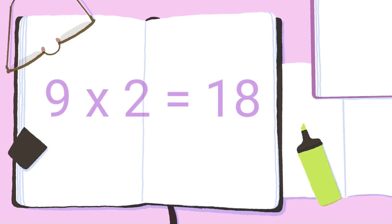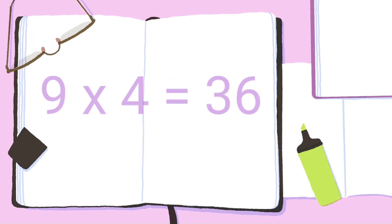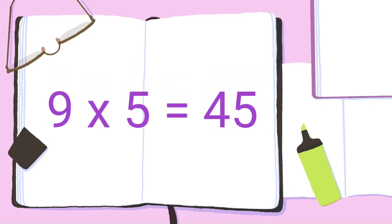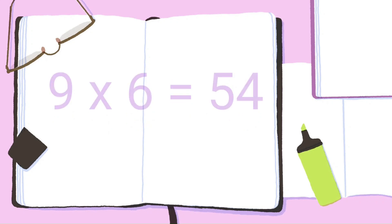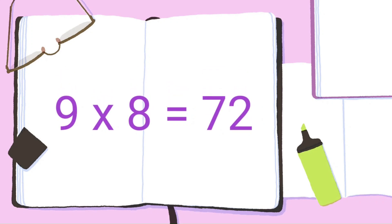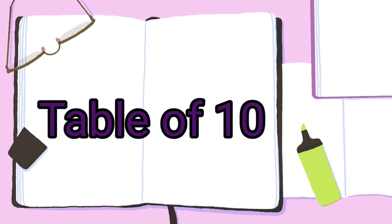9 ones are 9, 9 twos are 18, 9 threes are 27, 9 fours are 36, 9 fives are 45, 9 sixes are 54, 9 sevens are 63, 9 eights are 72, 9 nines are 81, 9 tens are 90. And the next table is 10.